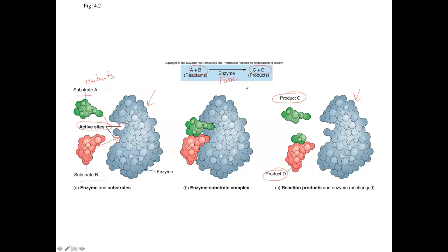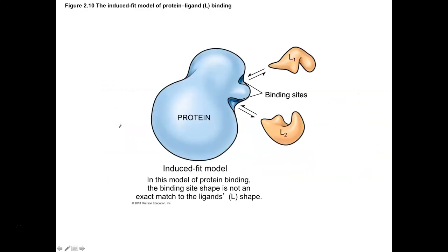The reactants, oftentimes called the substrates, are interacting with active sites so that the reactions can go faster. This is oftentimes referred to as the lock and key model. Just as a key fits into a specific lock, substrates fit into specific active sites. The lock and key model or induced fit model is used to describe what's happening in enzymatic reactions.